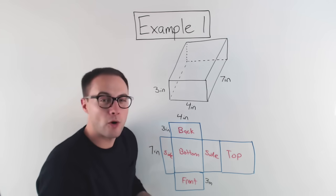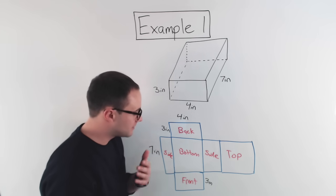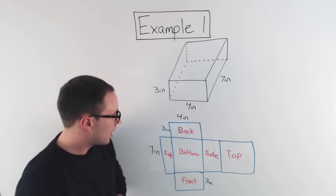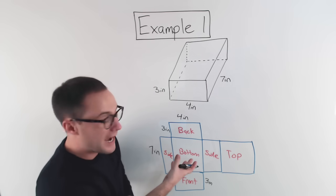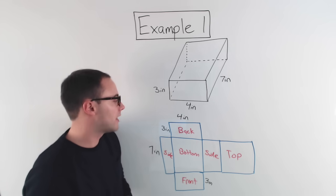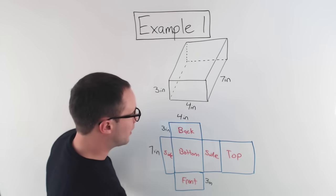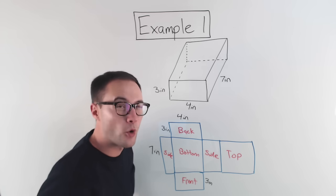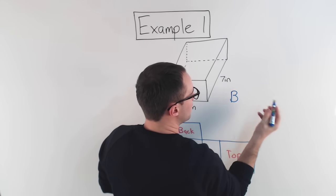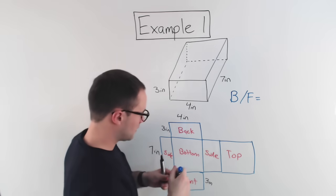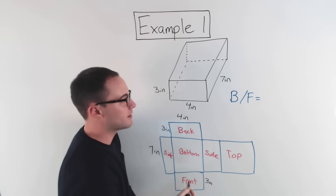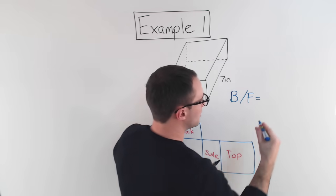Now that it's 2D, we just have a bunch of rectangles and we know how to find the area of those. The key is to be organized. So for back and front: 3 times 4 is 12, but I've got two of them, so that gives me 24.